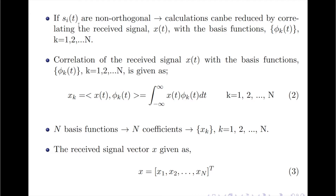If the input set of signals S_i of t are non-orthogonal, we can reduce the amount of multiplications and additions at the receiver by correlating the received signal X of t with the basis functions represented by phi_k of t. There are N basis functions. The correlation of X of t with basis function phi_k of t gives a coefficient X_k, which equals the inner product of X of t and phi_k of t, computed as the integral from minus infinity to plus infinity of X of t times phi_k of t dt, for every k from 1 to N. Since there are N basis functions, there will be N such coefficients X_k, where k takes values from 1 to N.